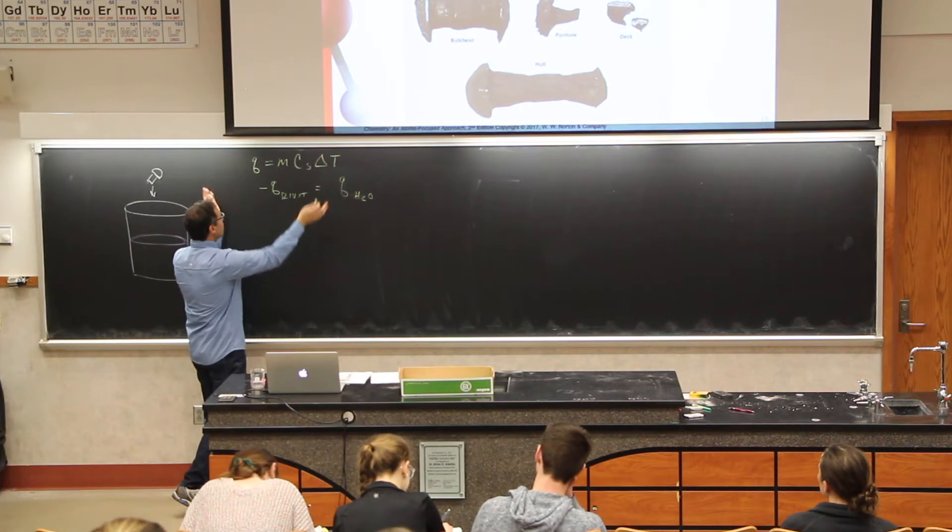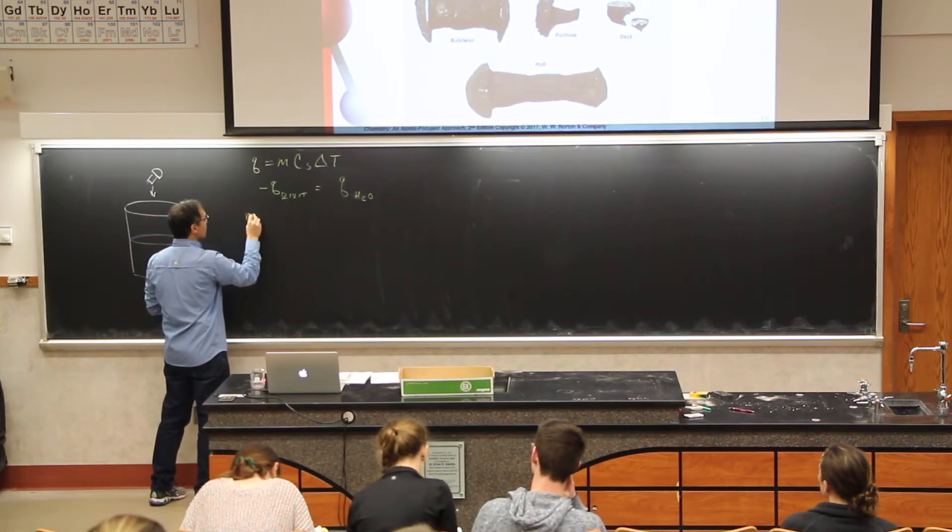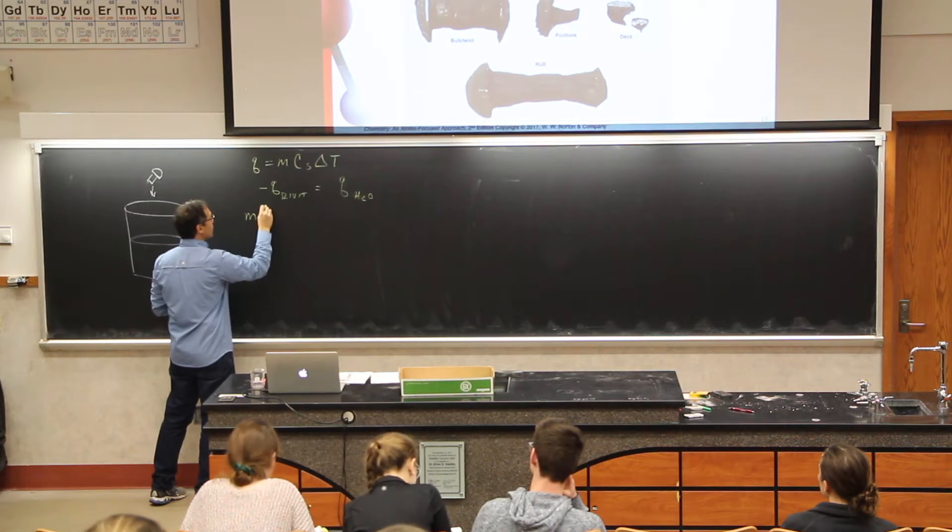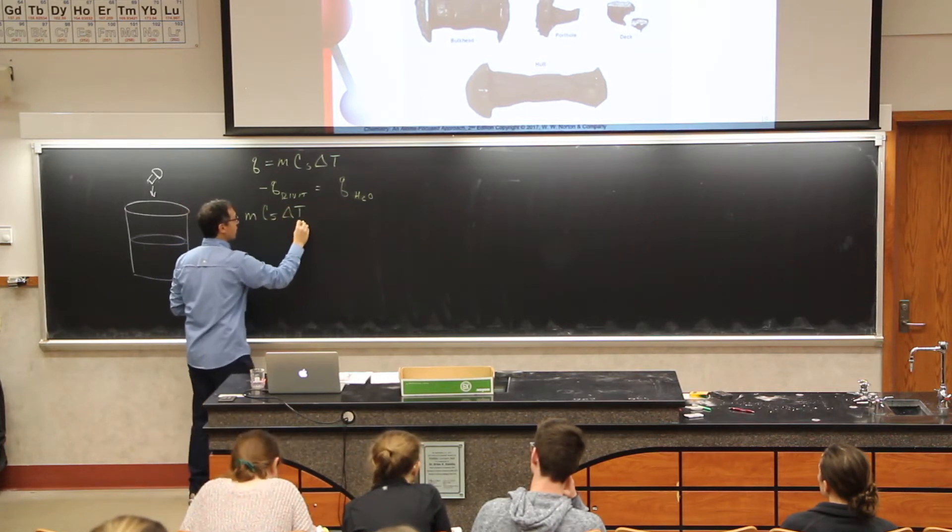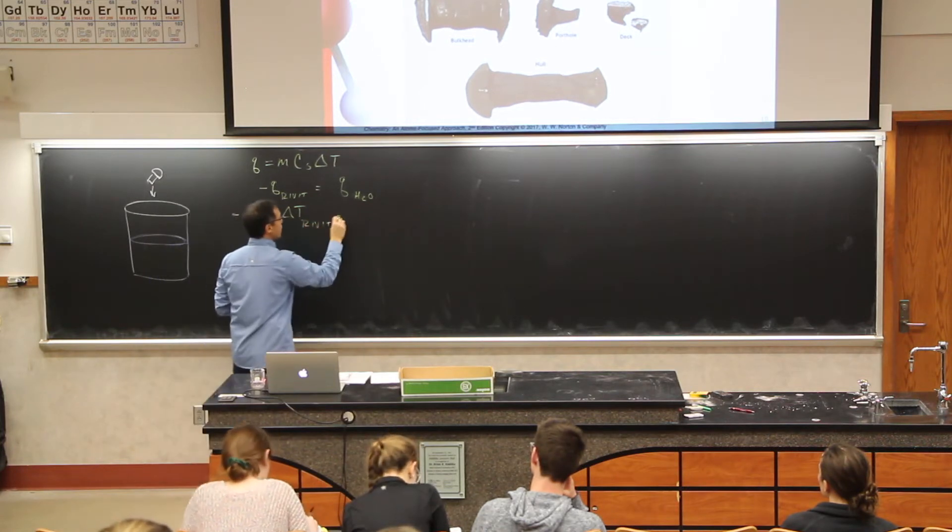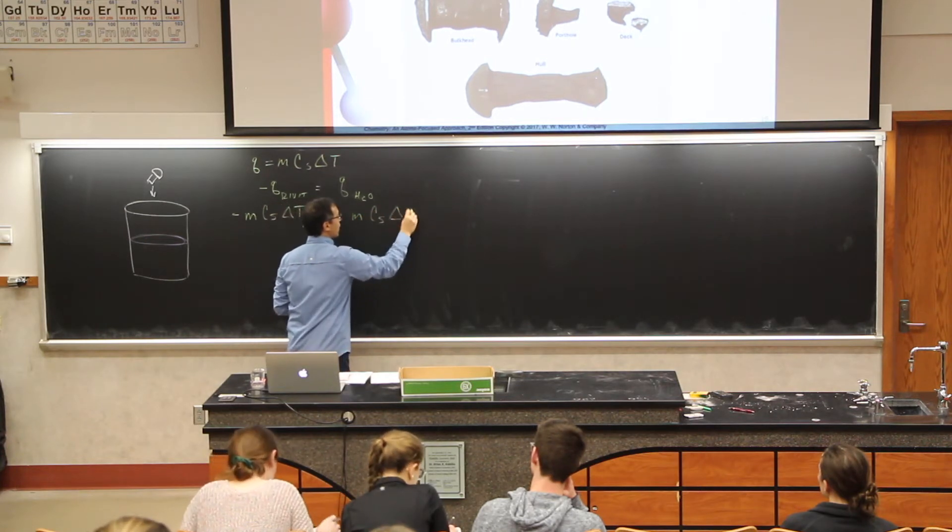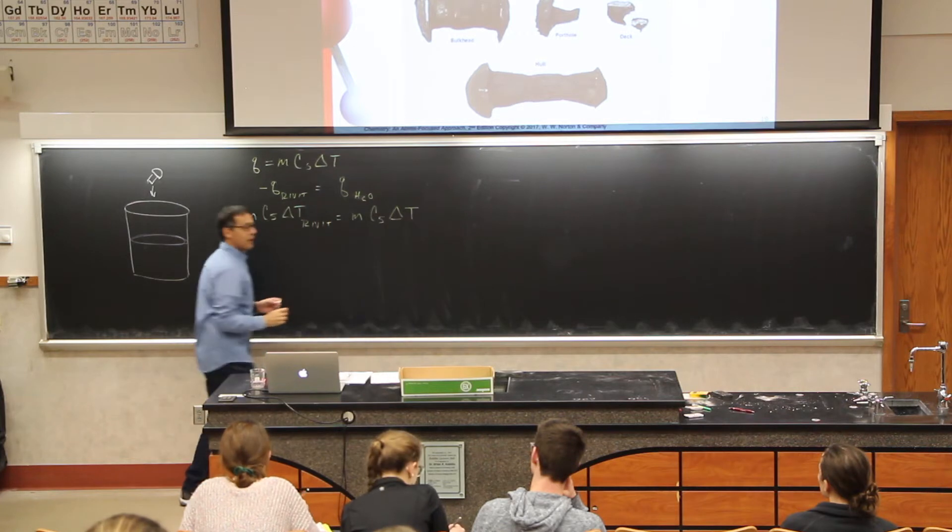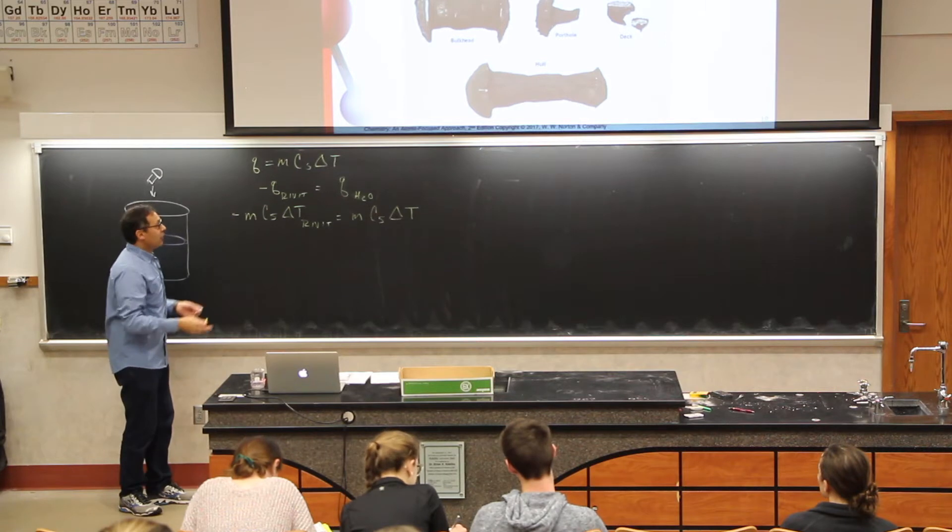So then we can expand this equation out, and we can say that the mass times the specific heat times the change in temperature of the rivet (negative) is equal to the mass times the specific heat of water times the change in temperature of the water. They would be equal to each other.